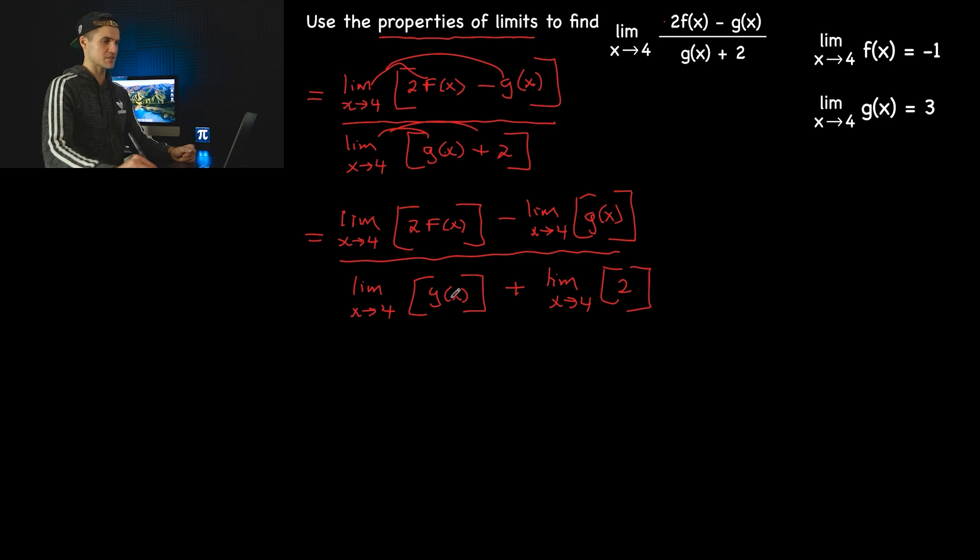And then from here we're actually almost done in plugging everything in. We have this g(x) isolated, this g(x) isolated, but here notice that we have a 2 here, this constant. And if you remember there's a property of limits where we could take the constant out.